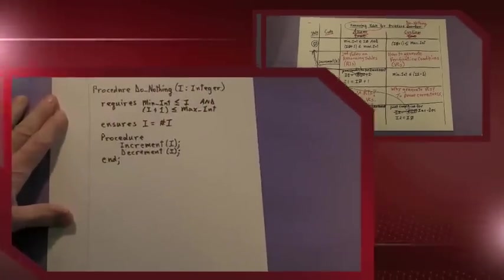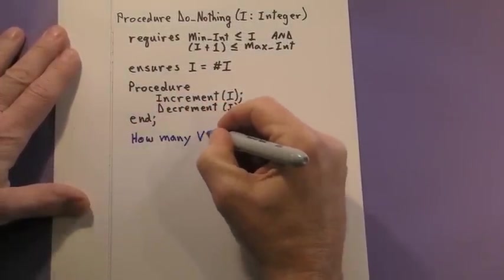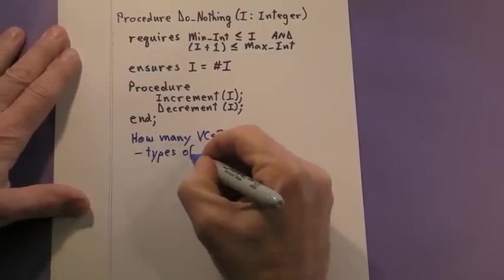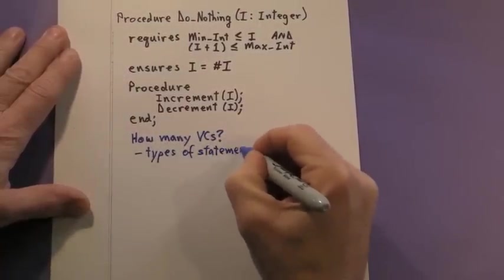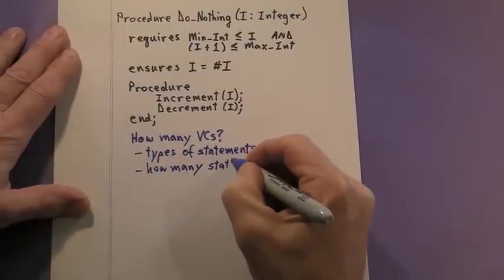Now let's look at how many VCs we're going to have to generate for the operation do nothing. That depends on the type of statements in the operation as well as how many statements are in the operation. This is a fairly simple operation.